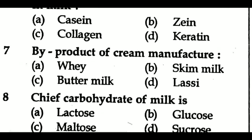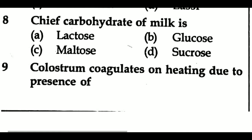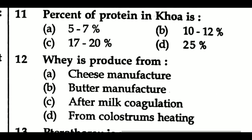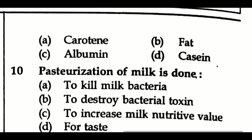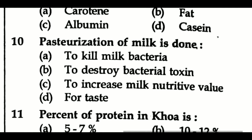Question 7: Byproduct of cream manufacture is — Option A: whey, Option B: skim milk, Option C: buttermilk, Option D: lassi. Question 8: Chief carbohydrate of milk is — Option A: lactose, Option B: glucose, Option C: maltose, Option D: sucrose. Question 9: Milk coagulates on heating due to the presence of — Option A: carotene, Option B: fat, Option C: albumin, Option D: casein.